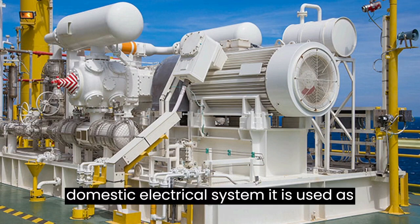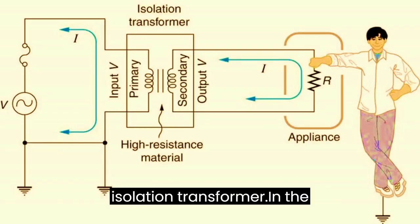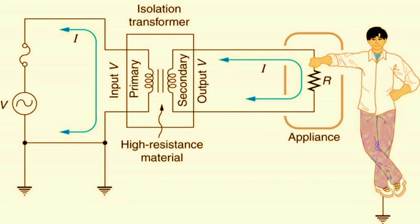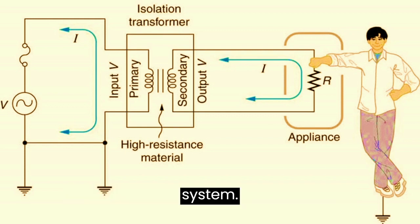And in the domestic electrical system, it is used as an isolation transformer in separated extra-low voltage protection systems.